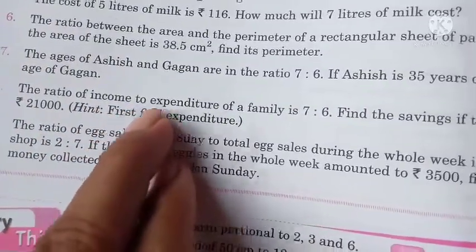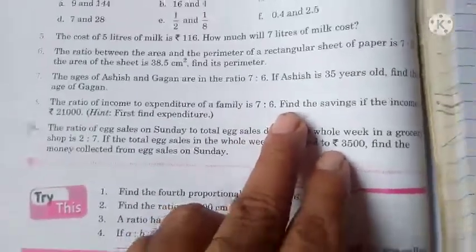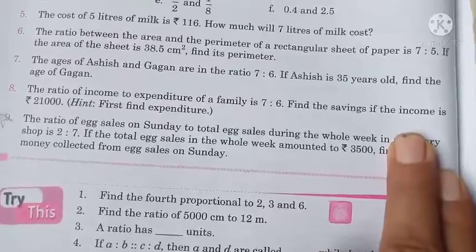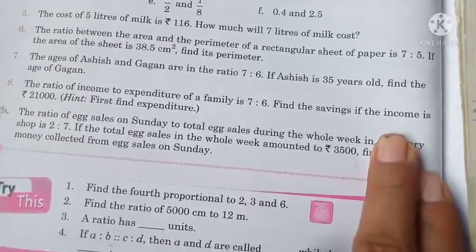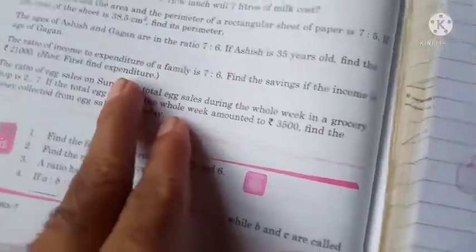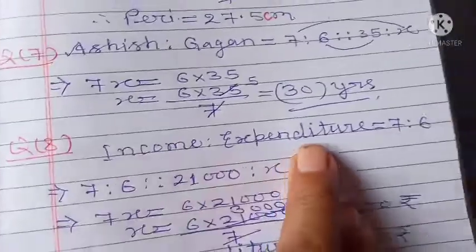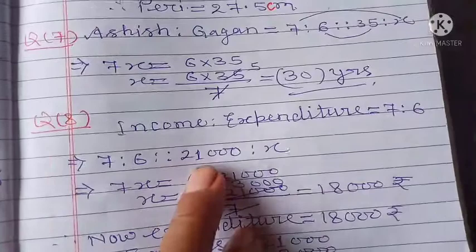The ratio of income to expenditure of a family is 7:6. Find the savings if the income is rupees 21,000. First, we'll find the expenditure. We write income ratio expenditure as 7:6.